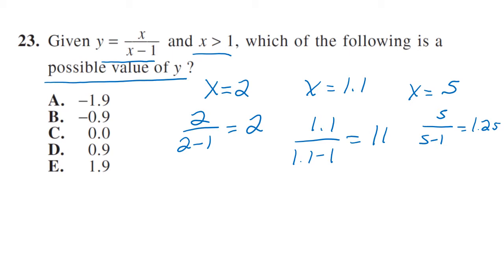The smaller this number is getting. We already know this is 1.25, we know this is 11. So it's not going to be negative and it doesn't look like it's definitely not going to be zero. It's not ever going to go below one, so it has to be choice E. I call this Nike math. Just do it. You just start plugging the numbers and see what happens.